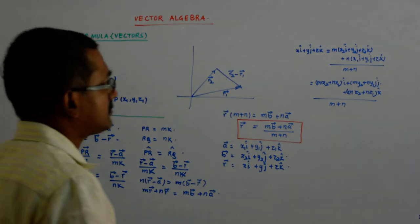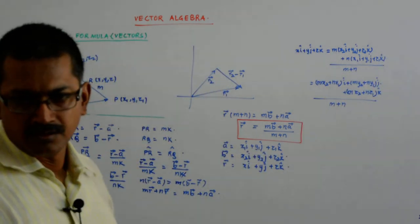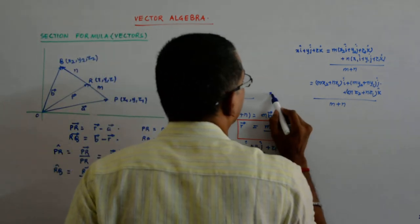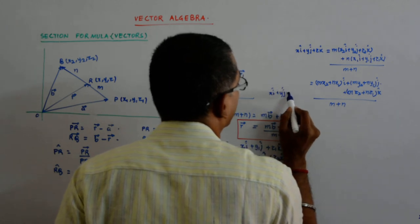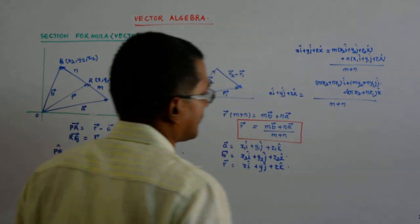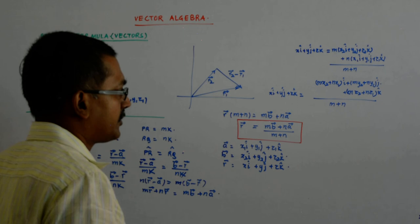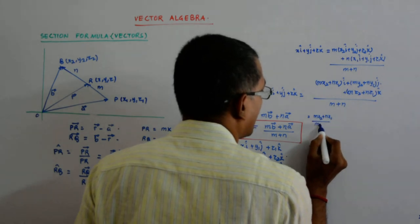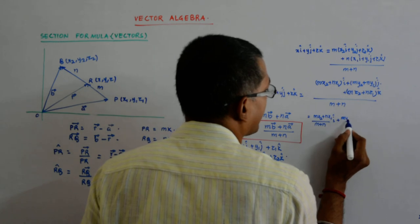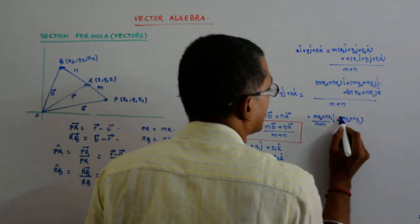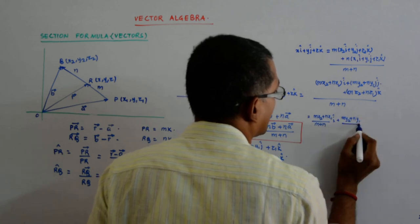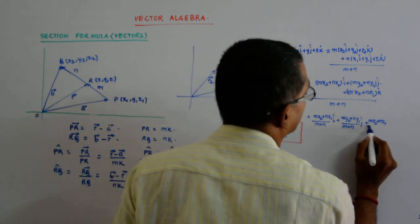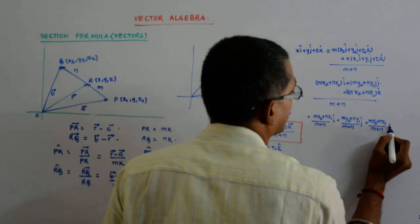Do you get that? I have taken together, I have collected the i cap coefficient, j cap coefficient and k cap coefficient, that is all I have done. Here you have x i cap plus yj cap plus z k cap. Do you see something? It says this is equal to mx2 plus nx1 upon m plus n i cap, my2 plus ny1 upon m plus n j cap, mz2 plus nz1 upon m plus n k cap.